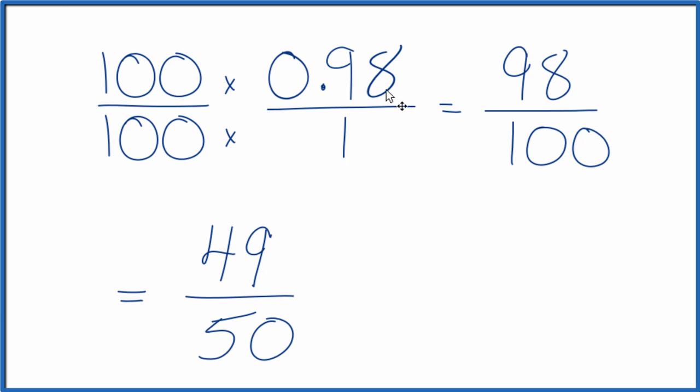So the decimal 0.98, you could write it as 98 over 100 or 49 over 50. And these are all equivalent. If you divide 49 by 50 or 98 by 100, you'll get 0.98. This is Dr. B. Thanks for watching.